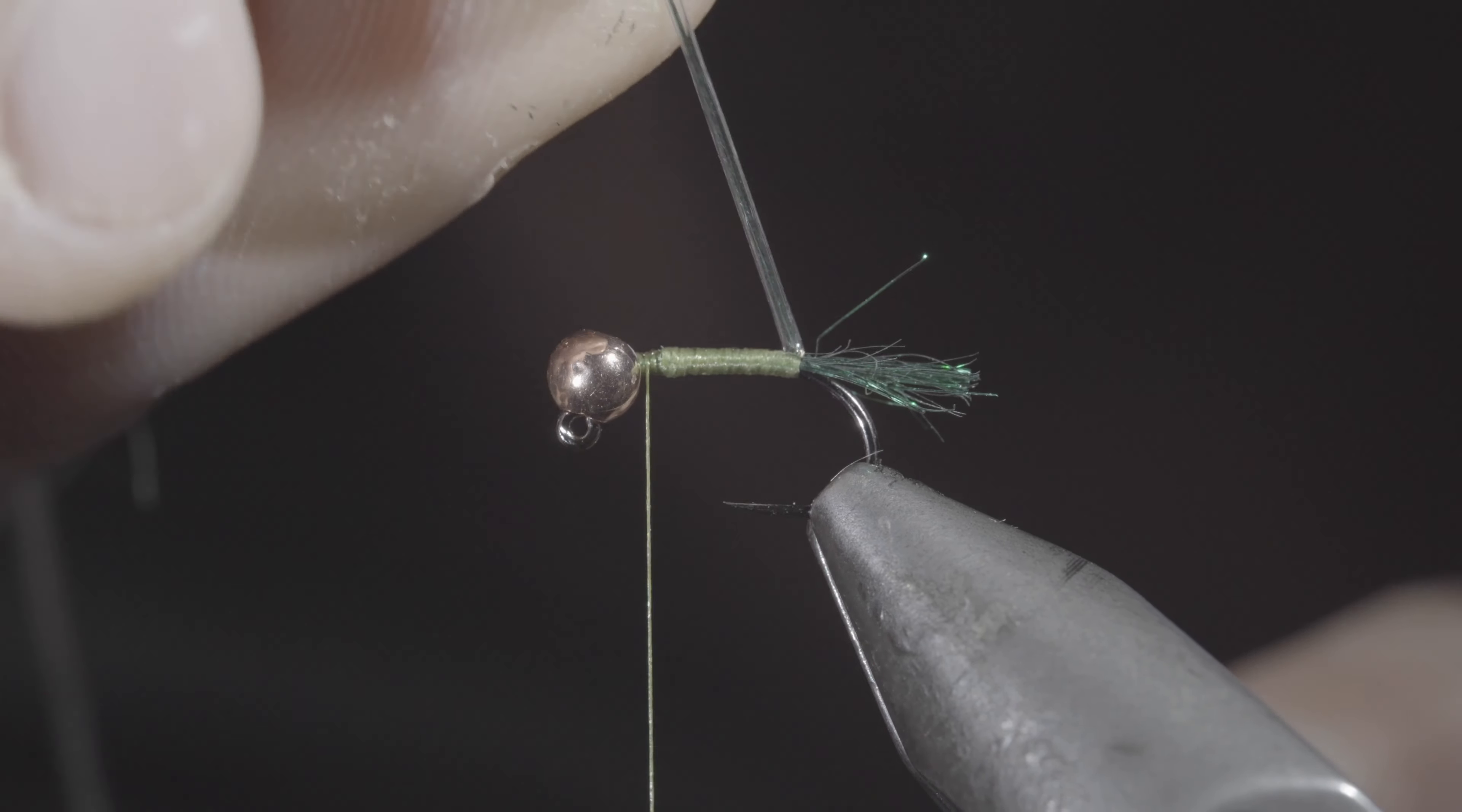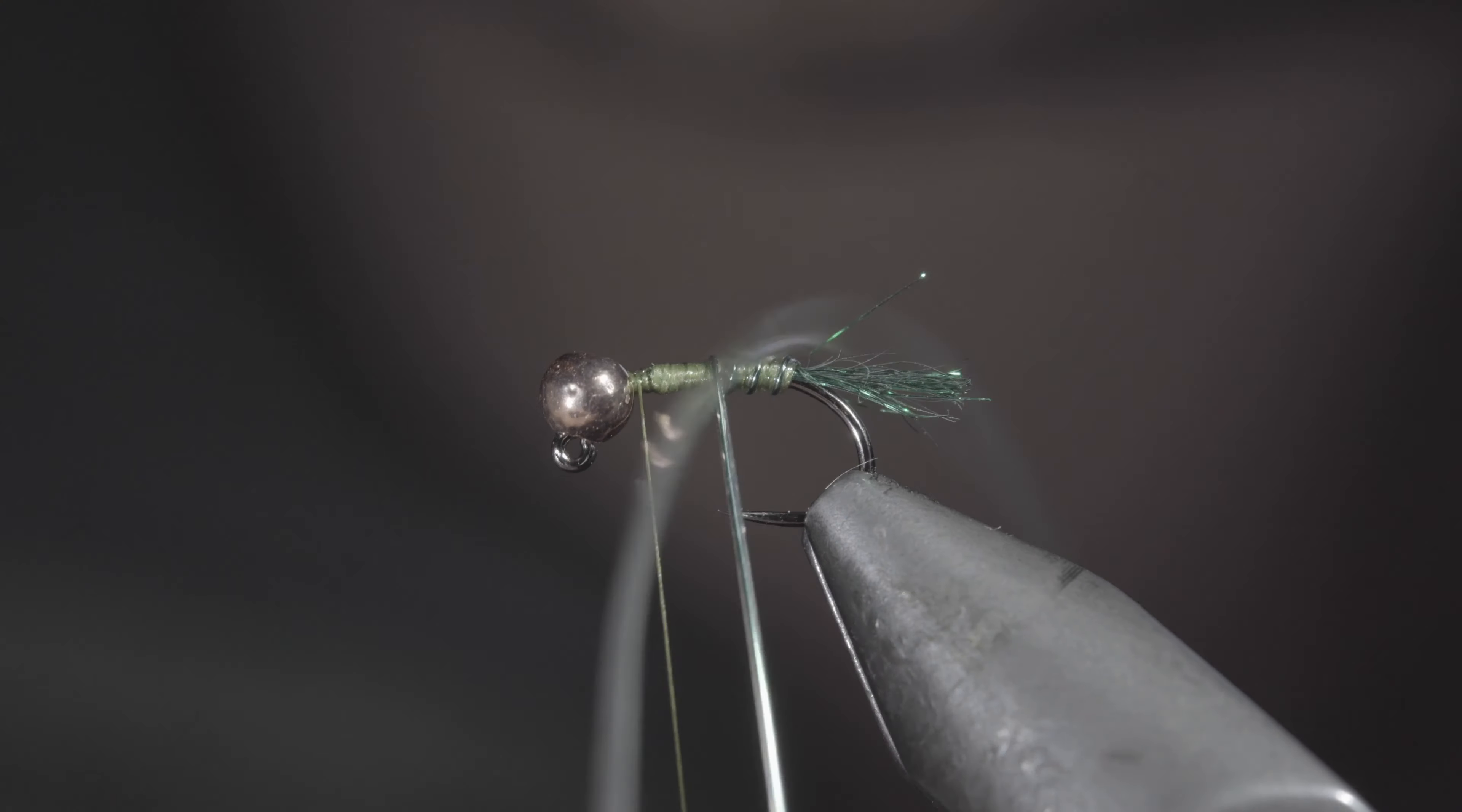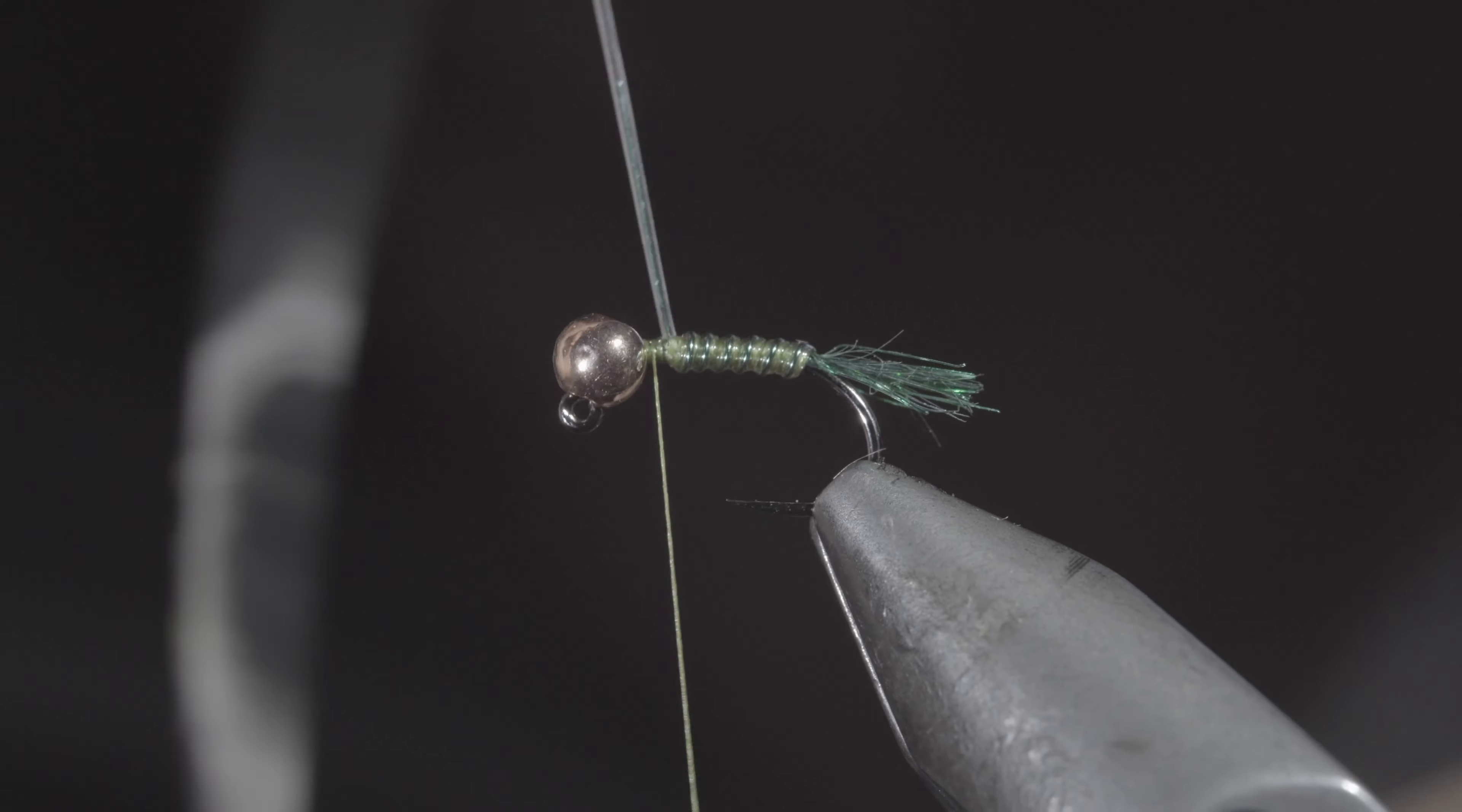With this complete, we'll grab our wire and tubing and begin to wrap this forward in closed touching spirals. This is a cool technique that creates an interesting segmentation and will take on the color of whatever underbody you decide to place below it. Continue to wrap it forward until you reach your thread.